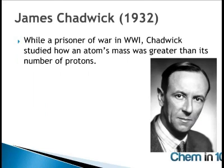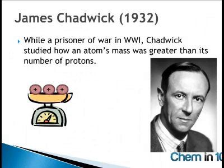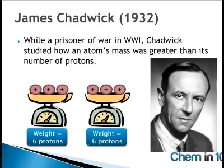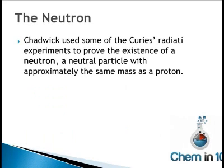James Chadwick, while a prisoner of war in World War I, studied how an atom's mass was greater than its number of protons would lead you to believe. For some reason, an atom containing three protons would weigh as if it contained six protons. He theorized that there must be three other particles in the nucleus with a similar mass to the protons. Using data collected from the Curies' radiation experiments, Chadwick was able to prove the existence of a neutron — a neutral particle contained within the nucleus with approximately the same mass as a proton.